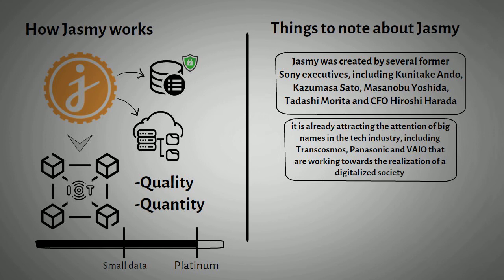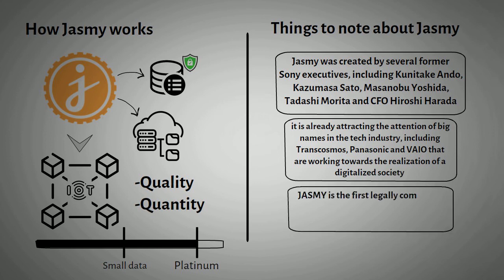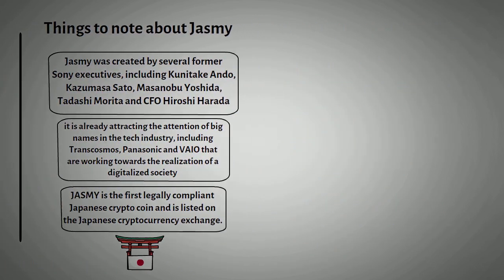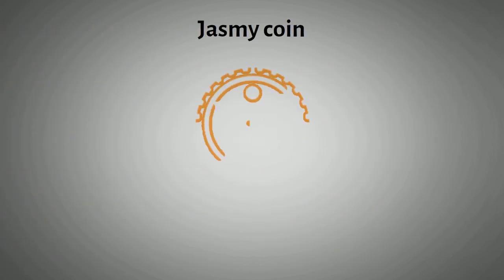Jasmine is the first legally compliant Japanese crypto coin and is listed on the Japanese cryptocurrency exchange. Japanese law strictly governs cryptocurrency transactions, which are subject to Financial Services Agency inspections. In other words, the Jasmine token might just be among the safest crypto investments in the world.